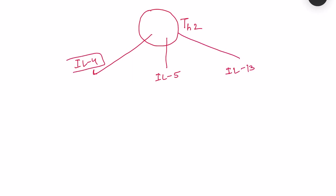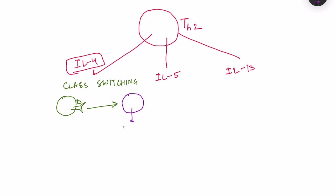Interleukin-4 is responsible for class switching of B cells. B cells normally have IgD antibodies on their surface for antigen recognition, but IL-4 causes them to switch to IgE-producing B cells — determining whether the cell produces IgG, IgM, or IgE. So they switch to IgE producing B cells.